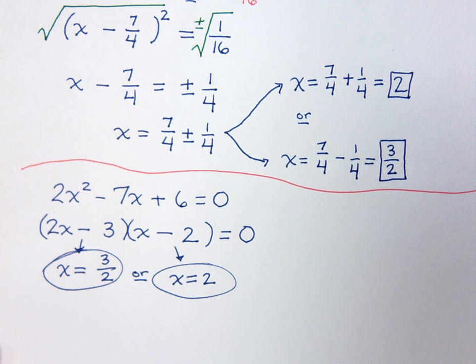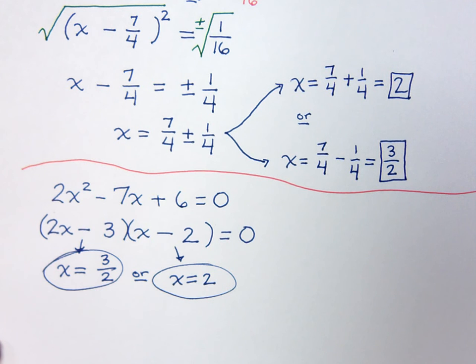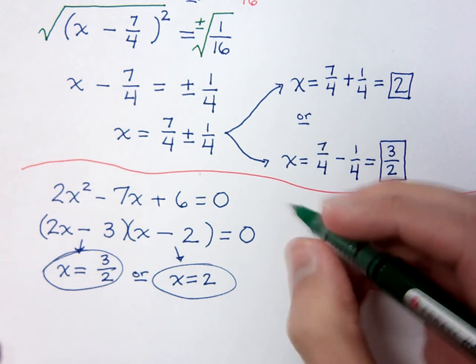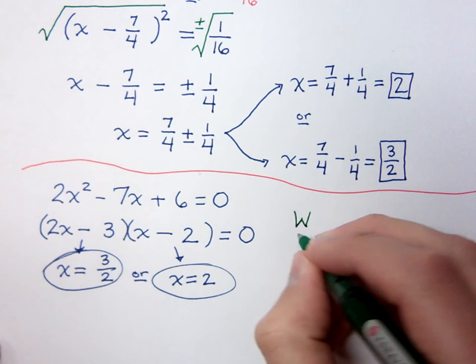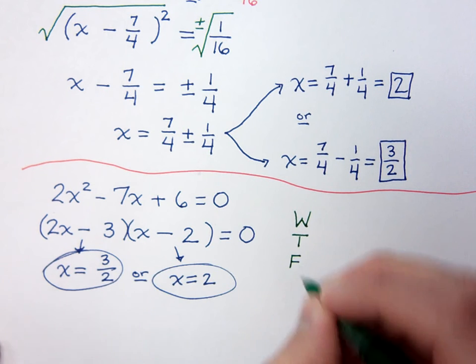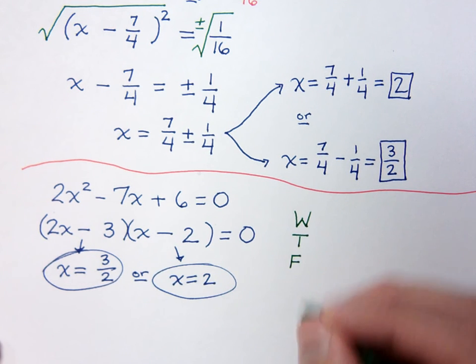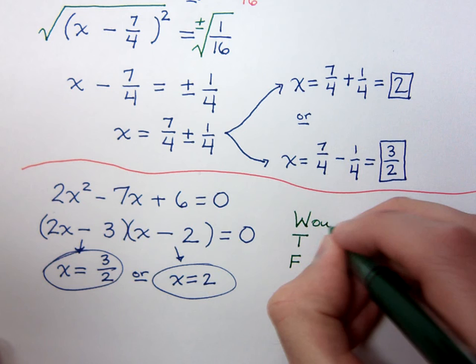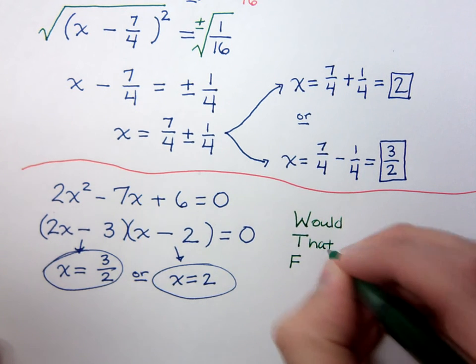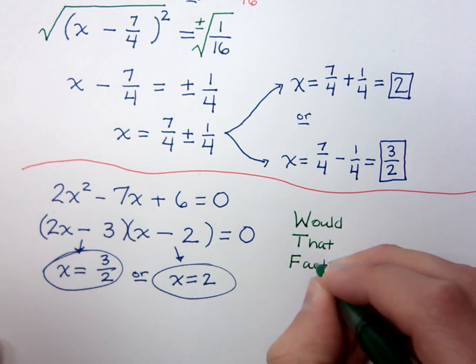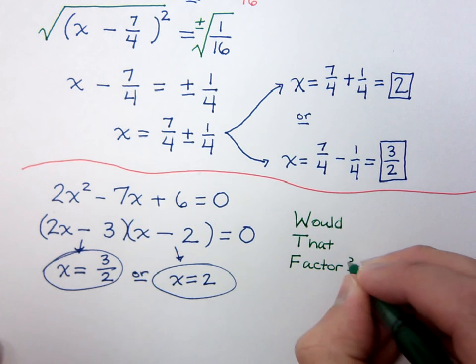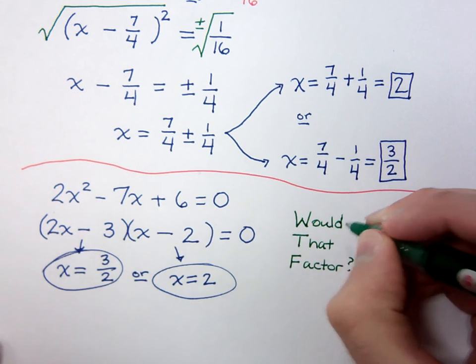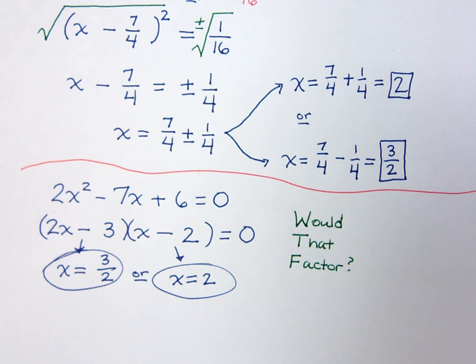So, when you've got these problems, and if you don't have to solve by a particular way, if the instructions don't say solve by completing the square, solve by the quadratic formula, this is what you need to be thinking. W. T. F. It does not mean Wednesday, Thursday, Friday. It means, would that factor? Just take a few moments to see if the polynomial that you have is factorable. If you can factor it, you can save yourself a lot of time.